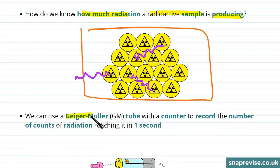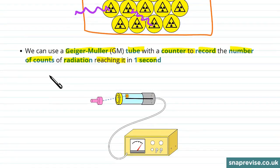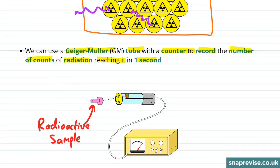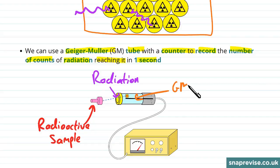We can use a Geiger-Müller tube with a counter to record the number of counts of radiation reaching it in one second. Here we've got some radioactive sample — it emits radiation, which is then detected by this GM or Geiger-Müller tube, and then the number of counts per second is displayed on the screen.